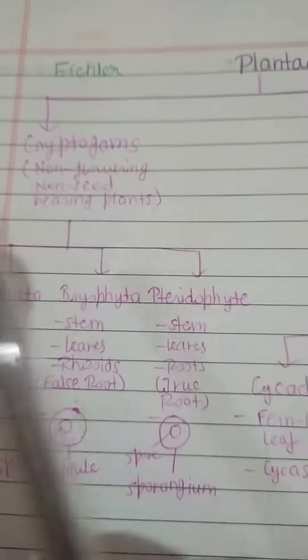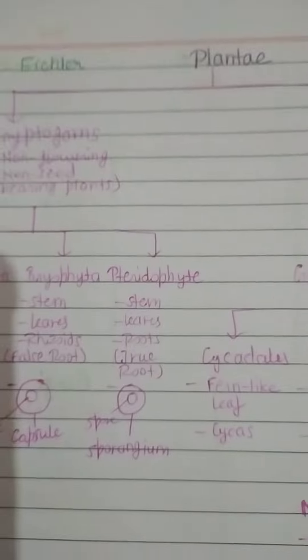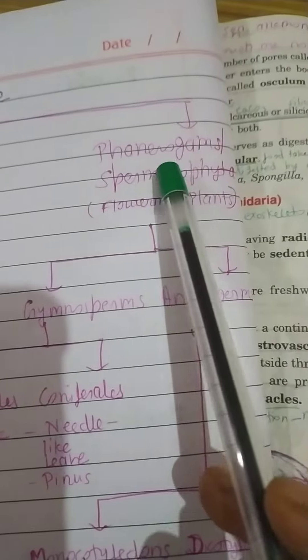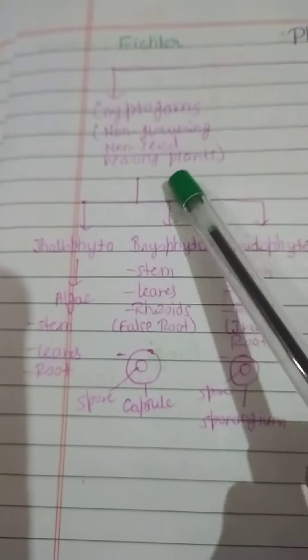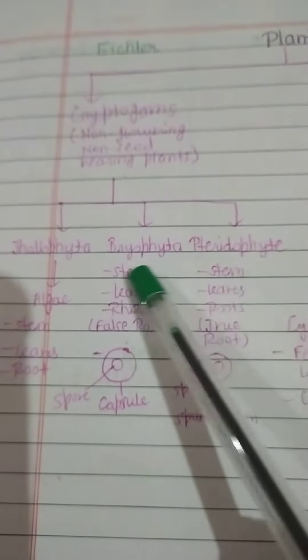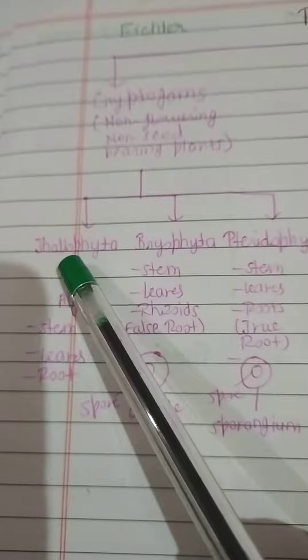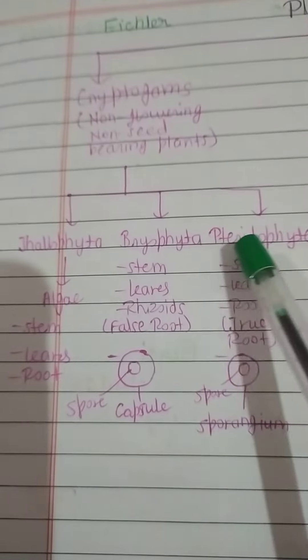Cryptogames are known as non-flowering and non-seed bearing plants, and Phanerogames are known as Spermatophyta, that is flowering plants. Cryptogames is divided into three parts: that is Thallophyta, Bryophyta, and Pteridophyta.